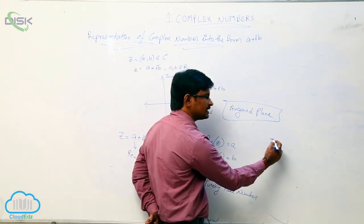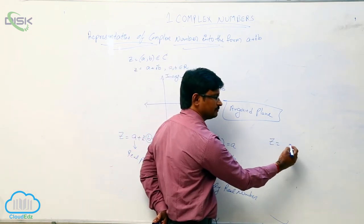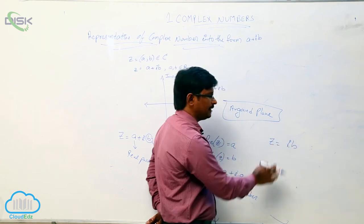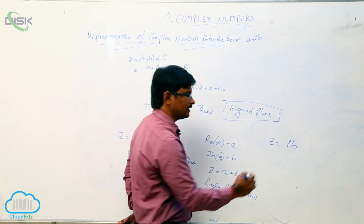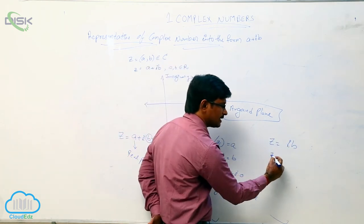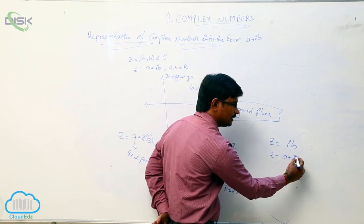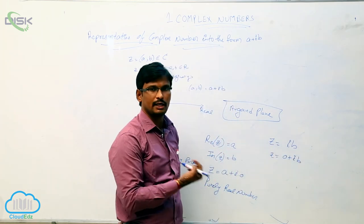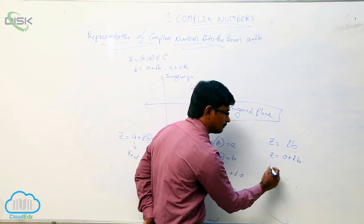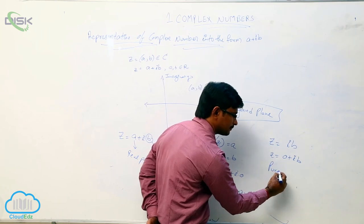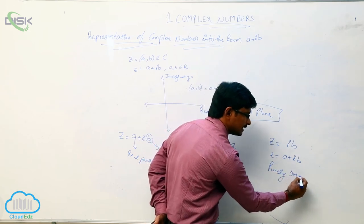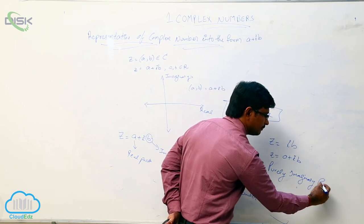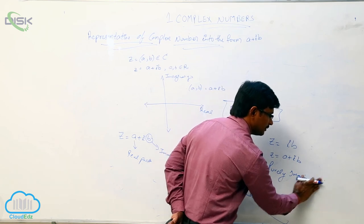If you have only an imaginary value, let it be ib, with no real part, we can write it as 0 plus ib. Since we have only the imaginary value, this is called a purely imaginary number.